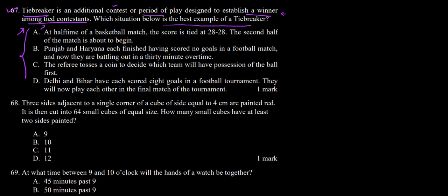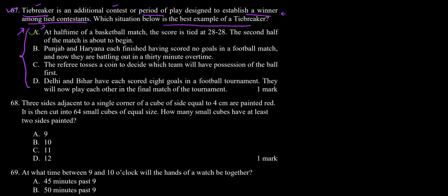We have four real-life situations and we need to find which one is an exact example of a tiebreaker. The first example: at halftime of a basketball match the score is tied at 28-28, and the second half of the match is about to begin. Here the score is a tie between two teams in a basketball game, but the match is not yet over — the match is at halftime.